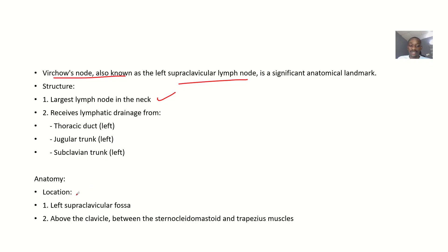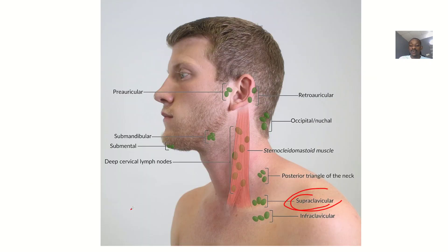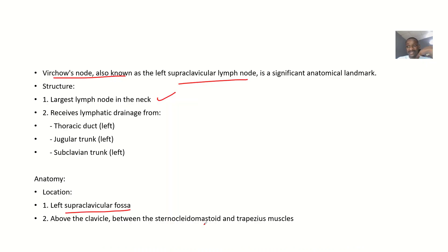Its location is in the left supraclavicular fossa — supraclavicular means above the clavicle. Anything above the clavicle is supraclavicular; anything below is infraclavicular. It is above the clavicle, between the sternocleidomastoid muscle and the trapezius muscle.